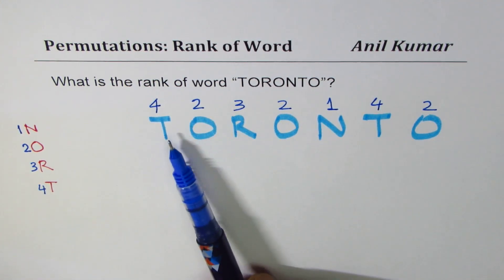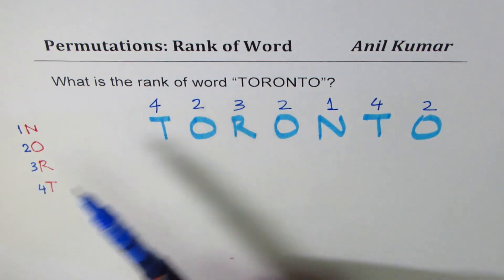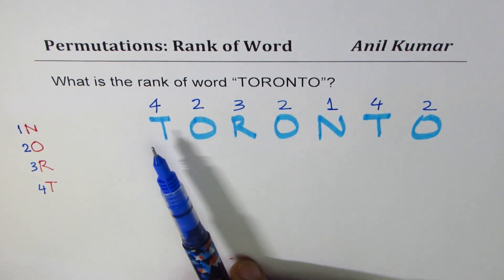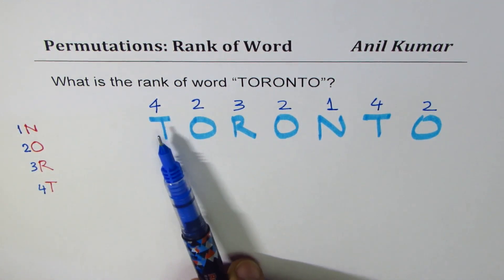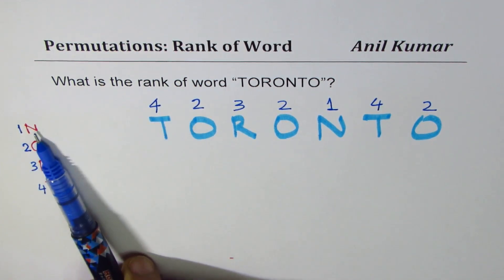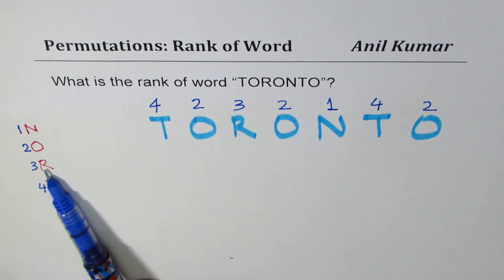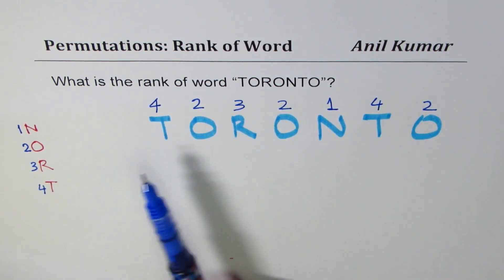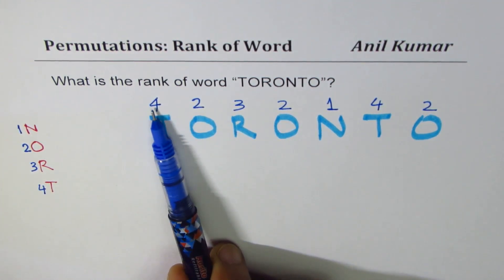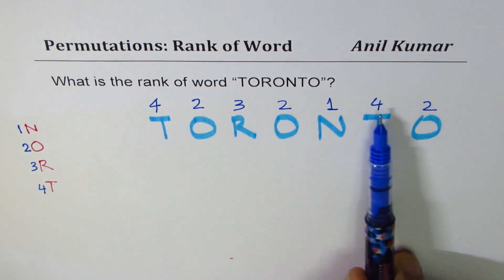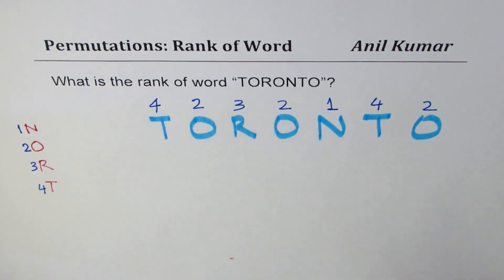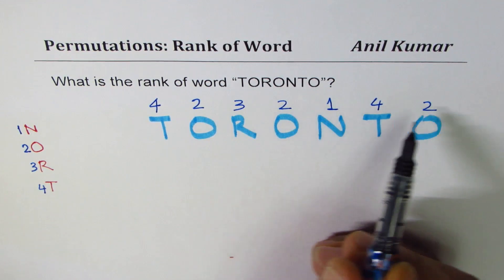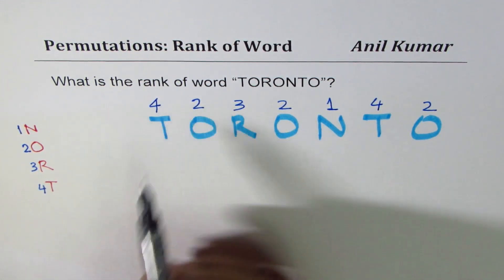We need to figure out how many words come before Toronto when arranged in alphabetical order. Before T, we have all words starting with N, O, and R — those rank higher than Toronto. The shortcut: for each position, count how many numbers to the right are smaller. For T (which is 4), we look right and find 5 such numbers less than 4, so we write 5.